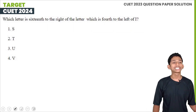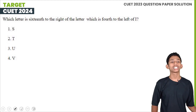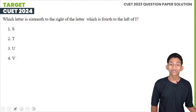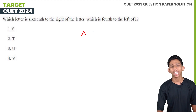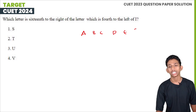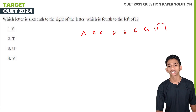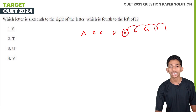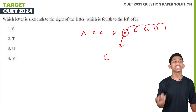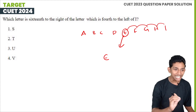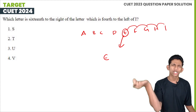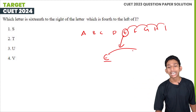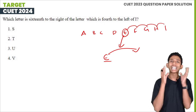Next question: which letter is 16th to the right of the letter which is 4th to the left of I? First, find the 4th to the left of I. The alphabet: A, B, C, D, E, F, G, H, I. The 4th to the left of I is E. E is the 5th letter. Then the 16th to the right of E is the 21st letter, which is U.